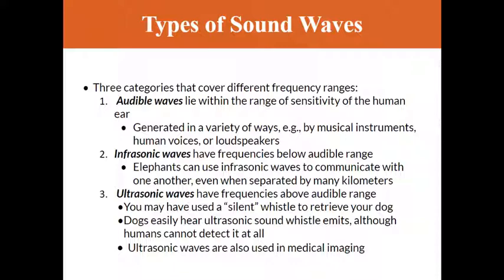Anything below the frequencies we can hear — sound waves where the pulses are really far apart — we call infrasonic waves. Elephants can hear things we can't, and these waves have an easy time propagating through air and can be heard many kilometers away. For ultrasonic waves, the frequencies are so high-pitched our ears cannot pick them up — that's why dog whistles work for dogs but not us. Ultrasonic imaging also sends waves into bones and tissue, and the reflections are used to generate medical images.